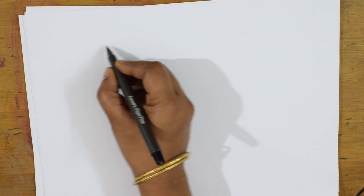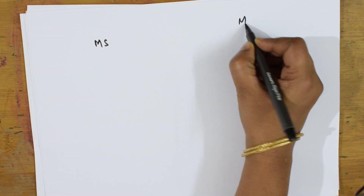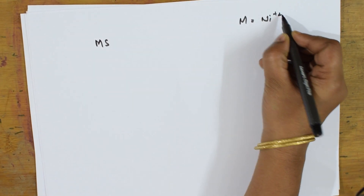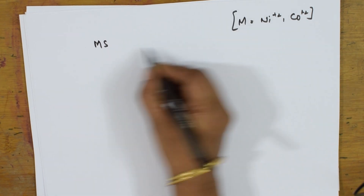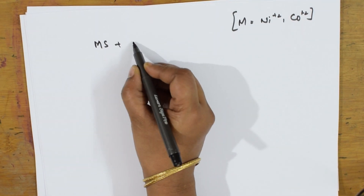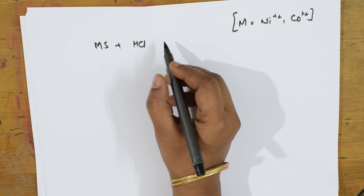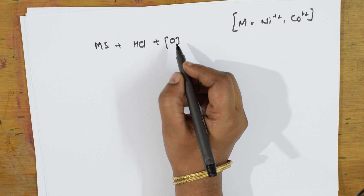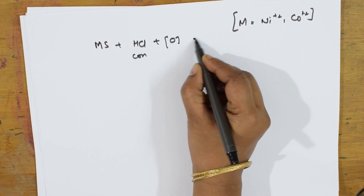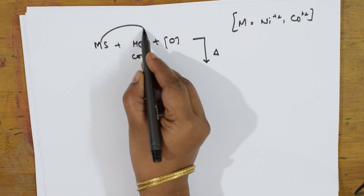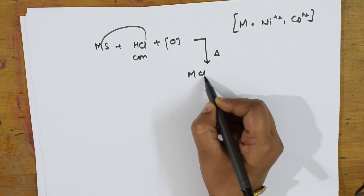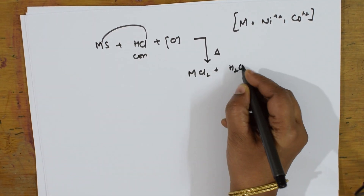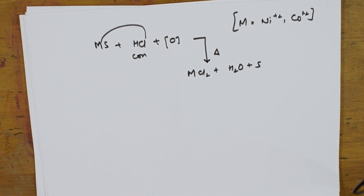Metal sulphide — where M can be nickel or cobalt — is treated with concentrated HCl. The oxygen produced from potassium chlorate is involved, and you heat this mixture. The products formed are MCl2 plus water. This equation may be asked as a viable equation, so note it carefully.